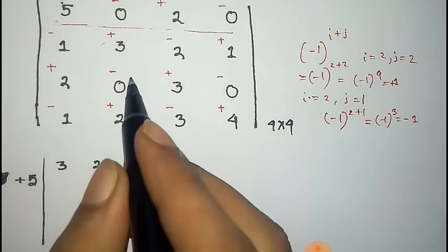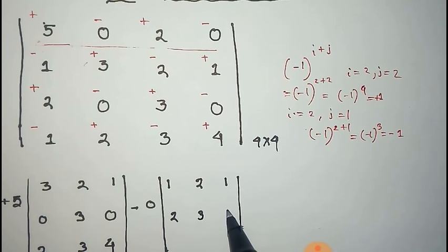For the element zero, the sign is minus, so we write minus zero. We cancel that row and column and write the remaining elements: 1, 1, 2 in the first row; 2, 1, 2 in the second row; 2, 0, 0 in the third row; then 0, 0, 1, 3, 4.